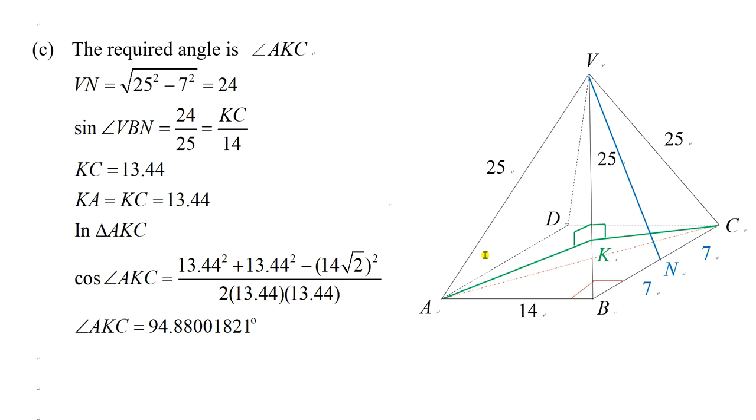For part C, to find the angle between VAB and VBC, you need to find the intersecting line first, which is VB. Then for each face, draw the perpendicular line to VB, which are AK and KC. If you draw a line AK perpendicular to VB, luckily KC will also be perpendicular to VB because VAB and VBC are congruent triangles. So they will go to the same point.